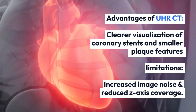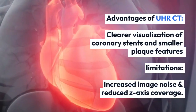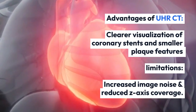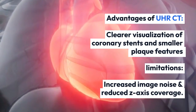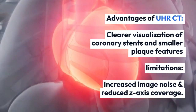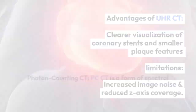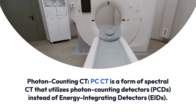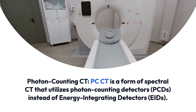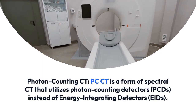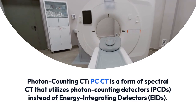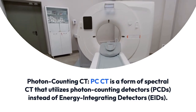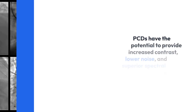Advantages of Ultra High Resolution CT include clearer visualization of coronary stents and smaller plaque features. Limitations include increased image noise and reduced Z-axis coverage. Photon Counting CT is a form of Spectral CT that utilizes Photon Counting Detectors instead of Energy Integrated Detectors.